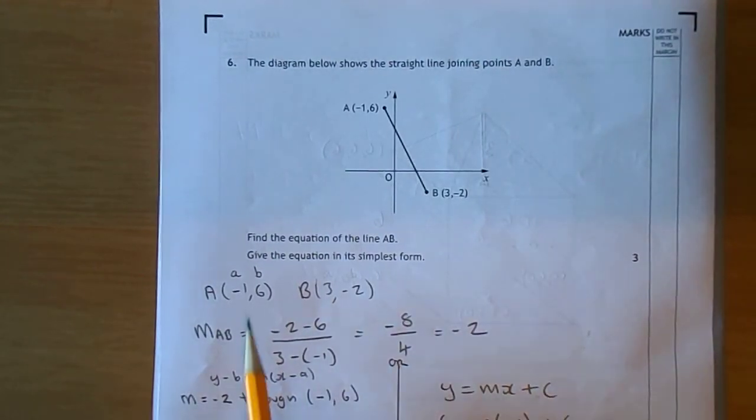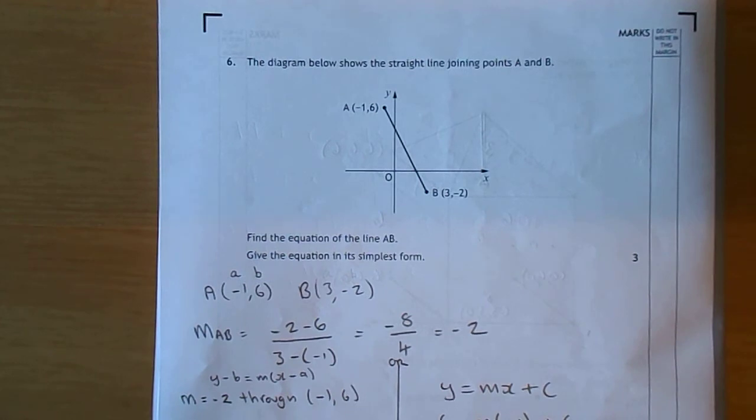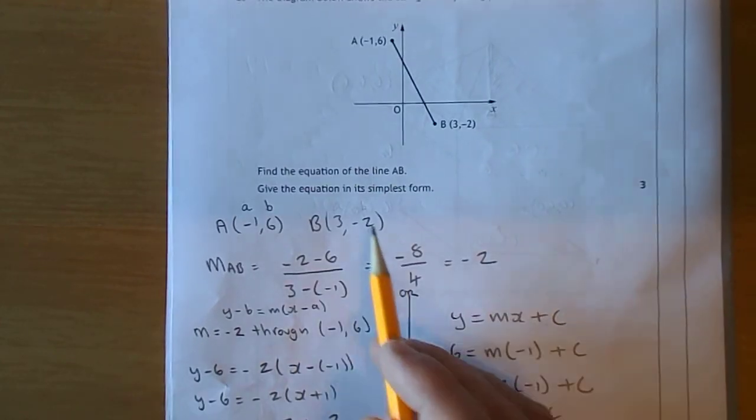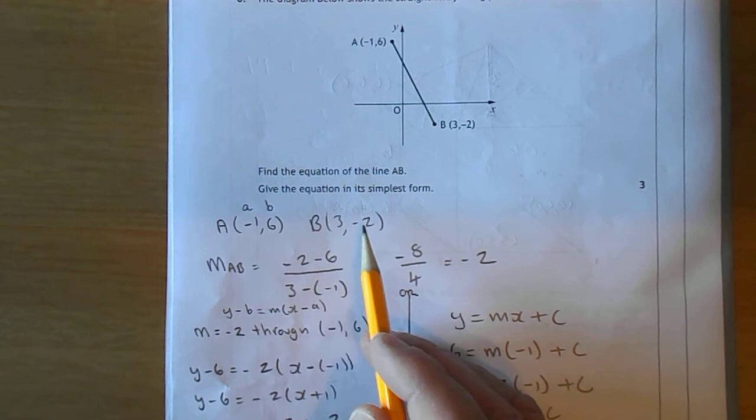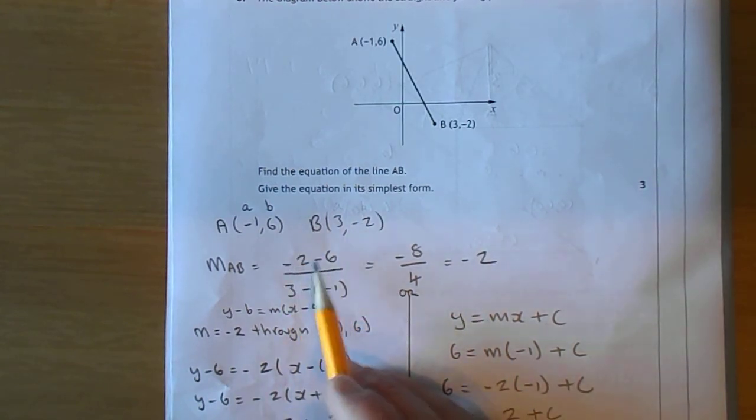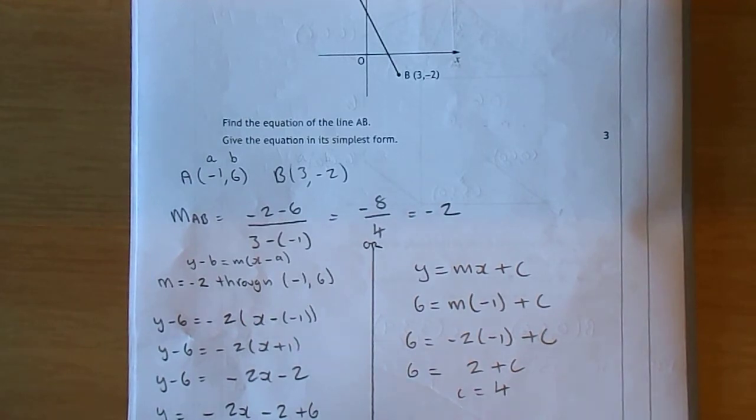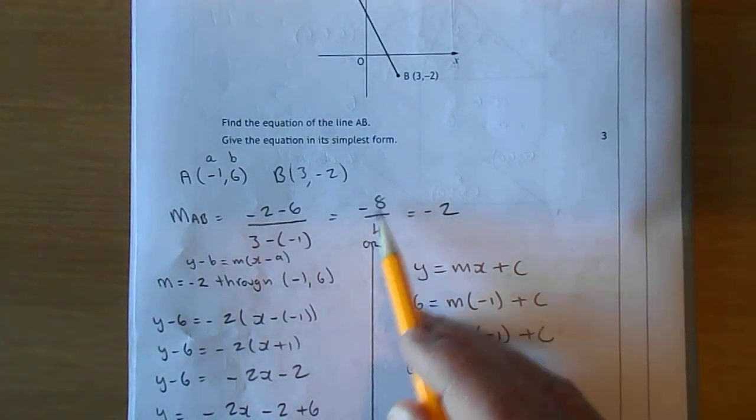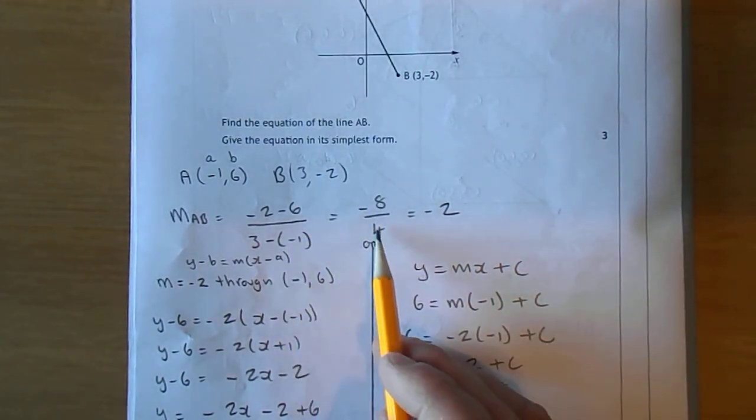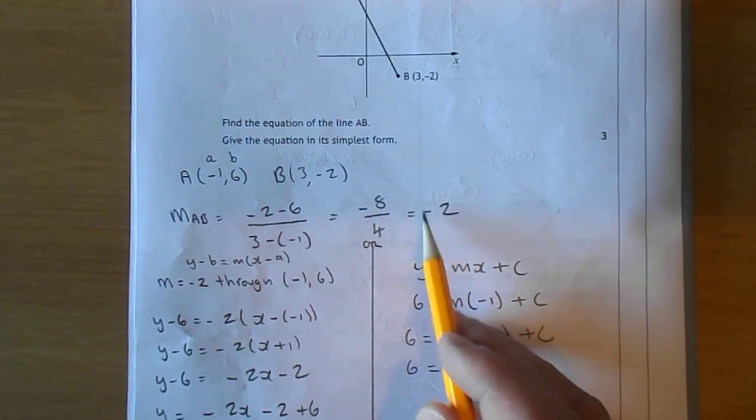So let's get the gradient or steepness of this line. So we have A minus 1, 6. And we have B being 3 minus 2. Well, the gradient is Y2 minus Y1 minus 2 take 6 over 3 take minus 1. Minus 2 take 6 is minus 8. 3 add 1 is 4. So the gradient is minus 2.